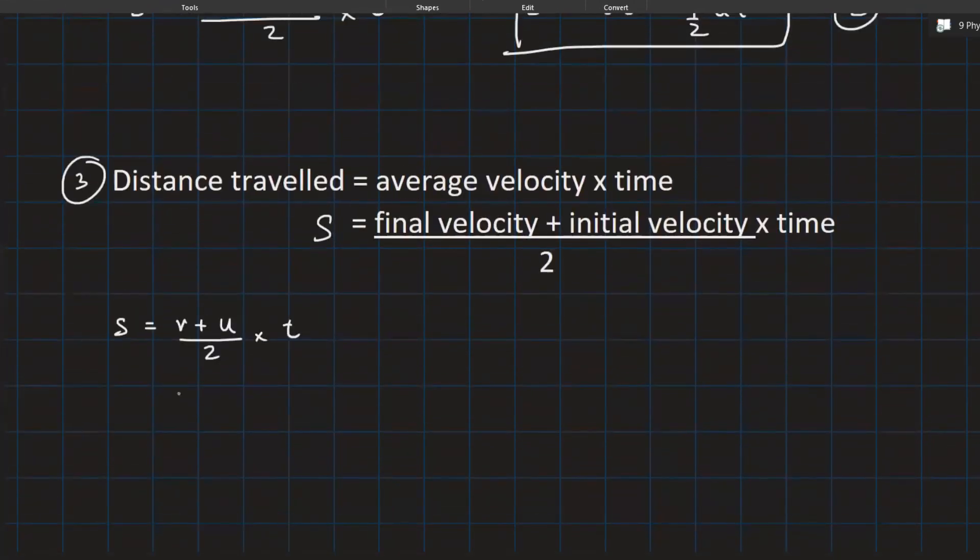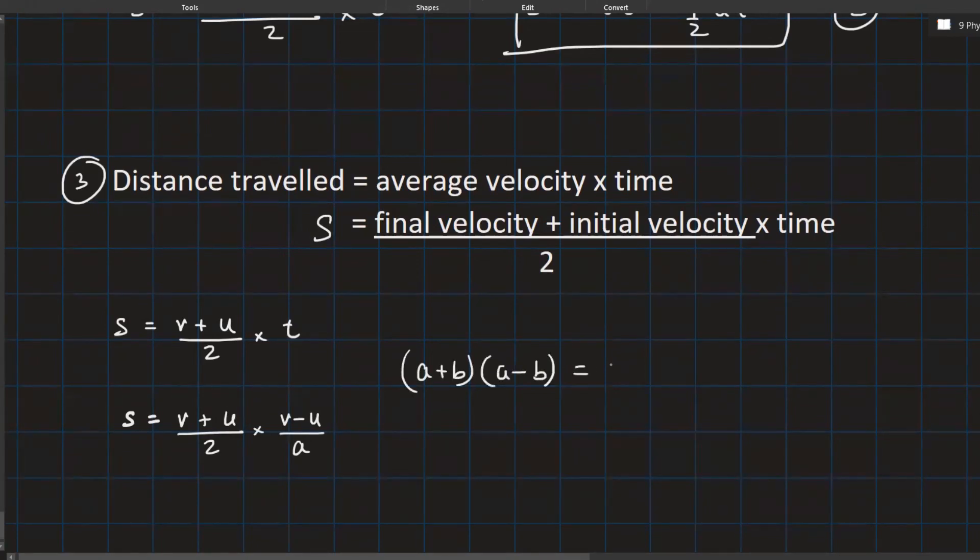So what do we get? We get s equals v plus u upon two into v minus u upon a. Now this looks like a math formula. What formula is that? a plus b into a minus b is a squared minus b squared. So let us write down that s is equal to v squared minus u squared upon 2a.